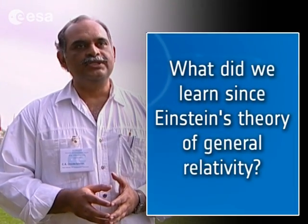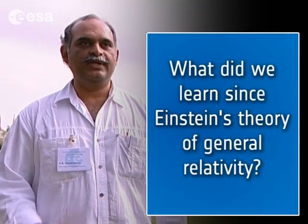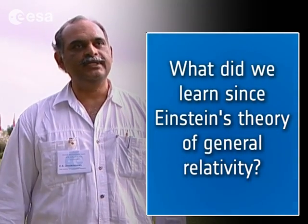When Einstein wrote these theories — the theory of motion as well as the theory of gravity — this was almost a hundred years ago, and there was no knowledge of cosmology at that time. In fact, our present knowledge of the cosmos, the galaxies and all that, came only in the last 40 or 50 years. So when these theories were constructed, there was no knowledge that there was so much matter in this universe.